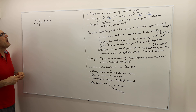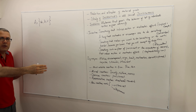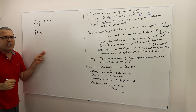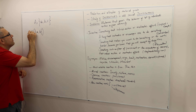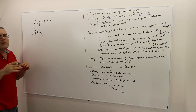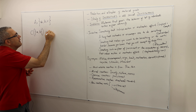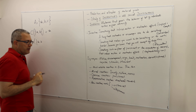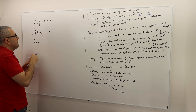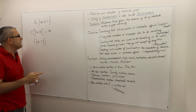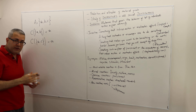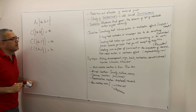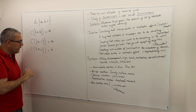We run an experiment: we give the decision maker a questionnaire. First, we offer only alternatives a and b — c is off the picture — and he picks a. Then we offer a and c, and he still picks a. Finally, we offer b and c, and he picks b.